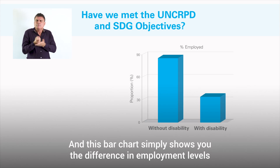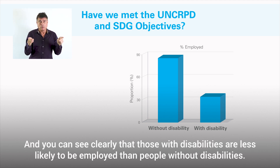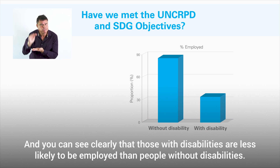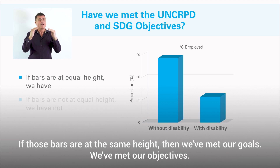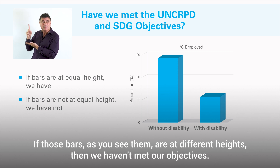This bar chart simply shows you the difference in employment levels between people with and without disabilities. You can see clearly that those with disabilities are less likely to be employed than people without disabilities. If those bars are at the same height, then we've met our goals, we've met our objectives. If those bars, as you see them, are at different heights, then we haven't met our objectives.